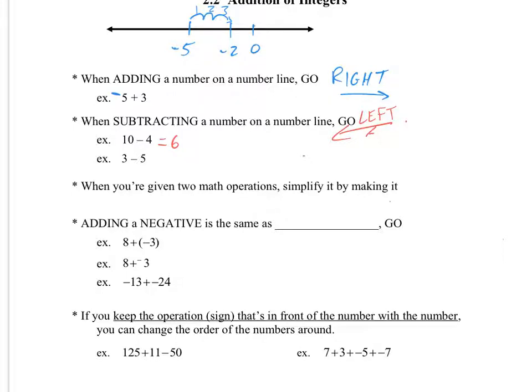If I have this 3 minus 5, 3 minus 5 is negative 2. I start at my 3, maybe 1, 2, 3. When I'm going minus 5, that means I have to go 5 to the left. So as I do my 5 jumps, it takes me 3 jumps to get down to 0. So 3 of my 5 jumps are there, but I have to go 2 more, which gets me down to my negative 2.